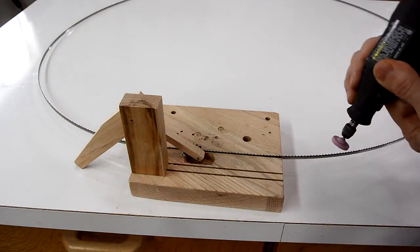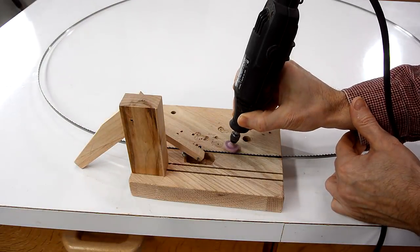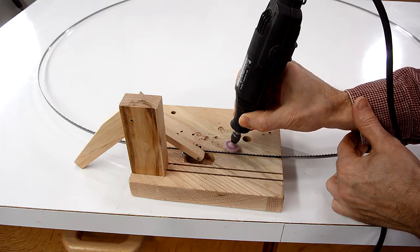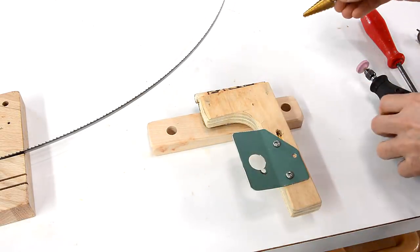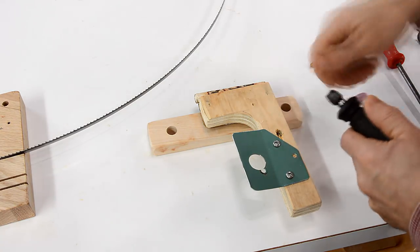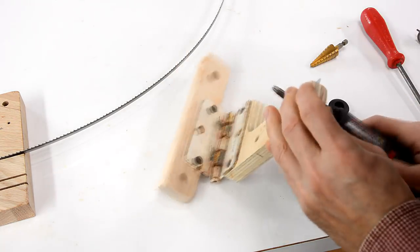Now I need a way of guiding the Dremel tool precisely onto the same spot all the time. I used a step drill to drill a hole big enough to fit around this part of the Dremel, so I can mount that in here.